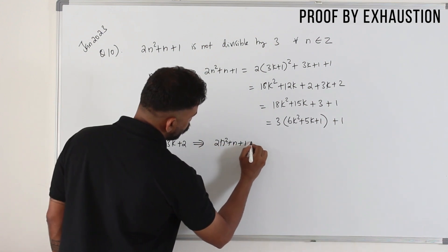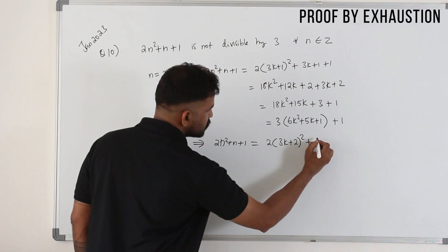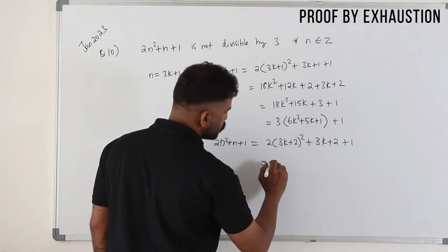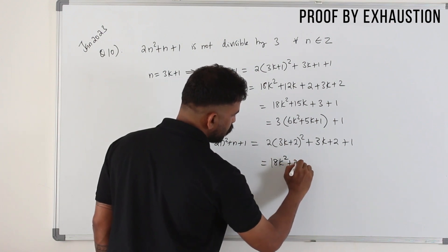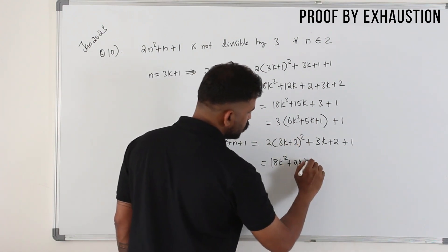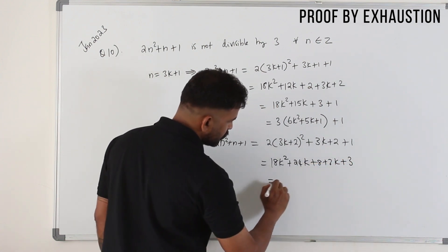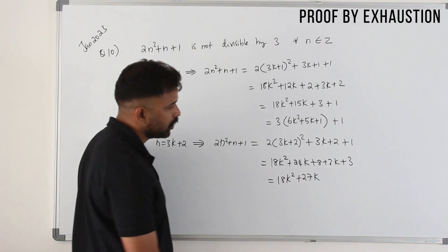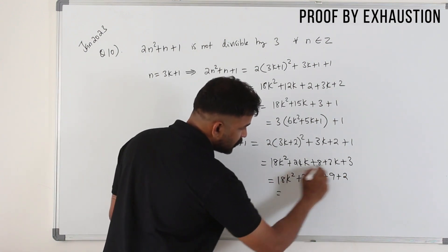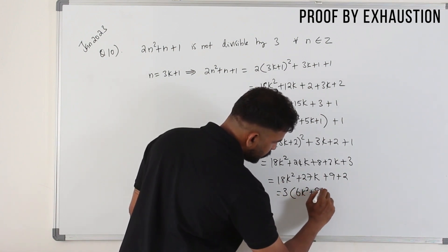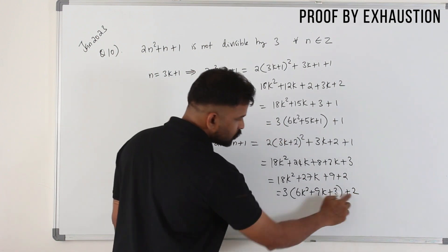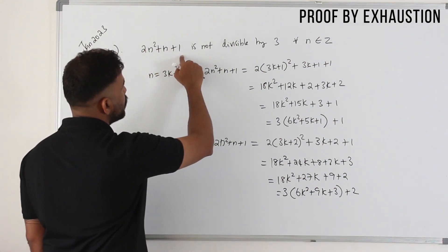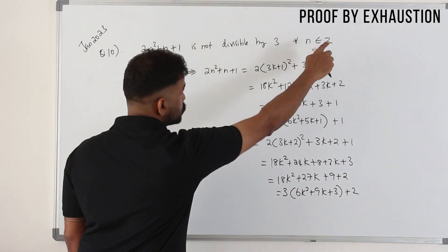For n = 3k + 2: 2n² + n + 1 = 2(3k + 2)² + (3k + 2) + 1. Expanding: 2(9k² + 12k + 4) + 3k + 3 = 18k² + 24k + 8 + 3k + 3 = 18k² + 27k + 11. Writing 11 as 9 + 2, take 3 as common: 3(6k² + 9k + 3) + 2. Since this is 3 times something plus 2, it is not divisible by 3. Therefore, 2n² + n + 1 is not divisible by 3 for all n belonging to ℤ. Hence proved.